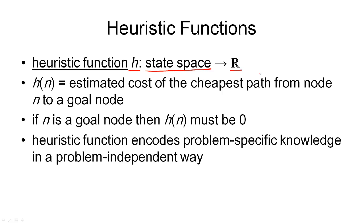So the heuristic function tells us how close the nearest goal node is. Obviously, if the node n given to the heuristic function is a goal node, then the value must be 0 — that is, we are already at a goal node, so the nearest goal node is at distance 0. As you can see, a heuristic function encodes problem-specific knowledge in a problem-independent way.